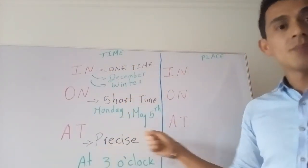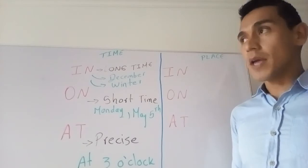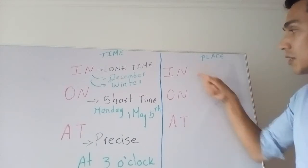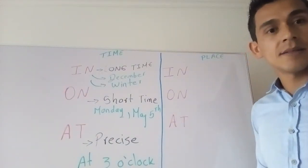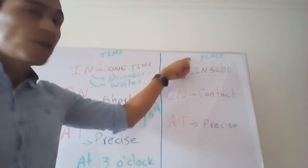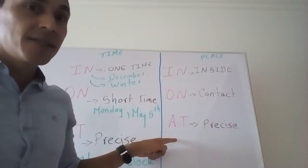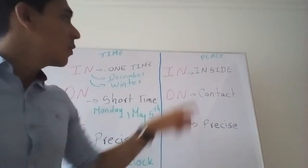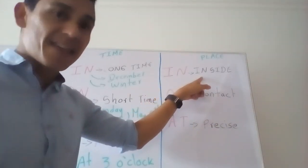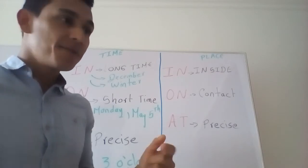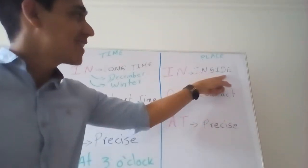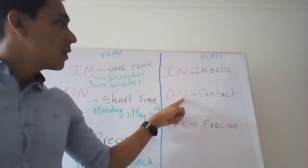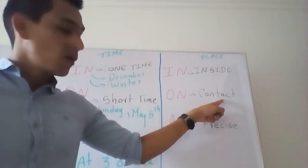Now, on the other hand, we have place prepositions — in, on, at — but as a place. We also use in, on, at as place prepositions. For example, 'in' is the strategy when we emphasize something inside. For example, 'I am in the classroom' because I am inside. On the other hand, we use 'on' for contact — when something has contact with something.